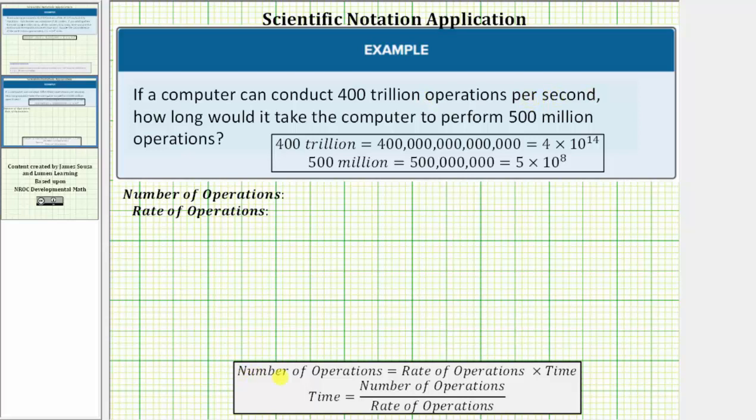In general, the number of operations performed is equal to the rate of operations times the time. Because our question is asking about time, to solve this equation for time, we divide both sides by the rate of operations. Therefore, time equals the number of operations divided by the rate of operations.